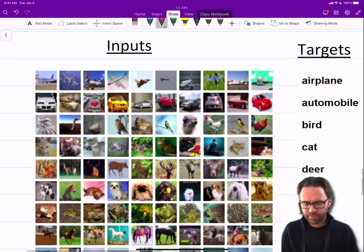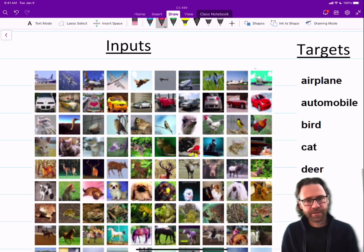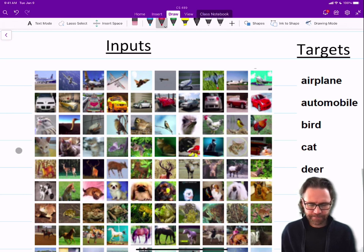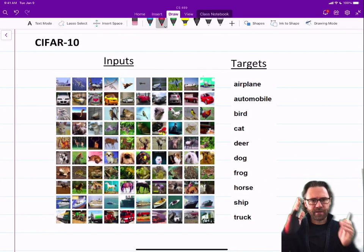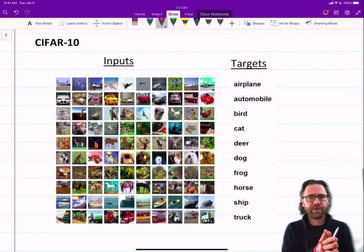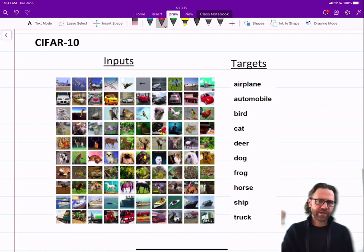And you can see the top row is all airplanes, the next row is all cars or automobiles and birds and cats. The image is input into the network, the neural network. The output is a 10-vector where there should be, ideally, a single one. The target is a single one in the 10-vector, a one-hot vector. So that's classification. Regression: the output is continuous in nature. In classification: the output is discrete in nature, categories.